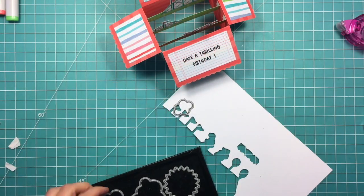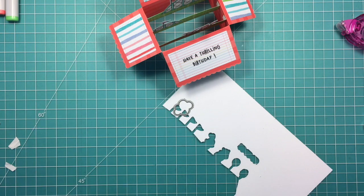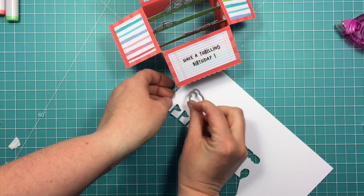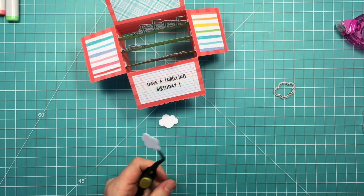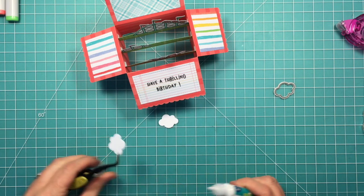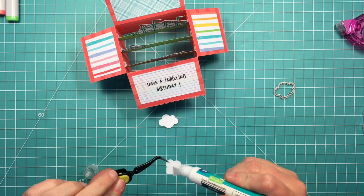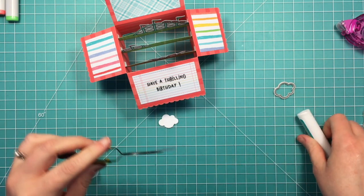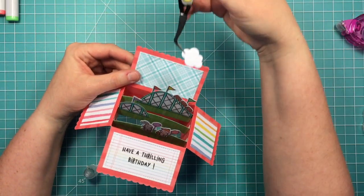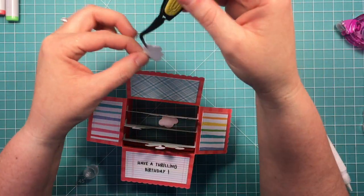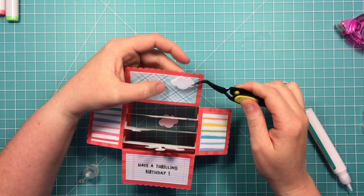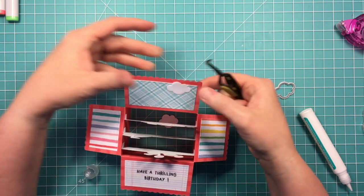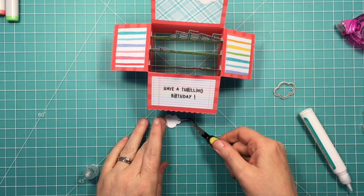To finish it off, I'm pulling out a very small cloud die, and I'm going to cut a couple clouds from this white piece of card stock. I'm just going to add those to that back panel with some liquid glue. I'm using my tweezers so that hopefully I don't get glue all over my fingers and mess up my pretty almost completed card here.